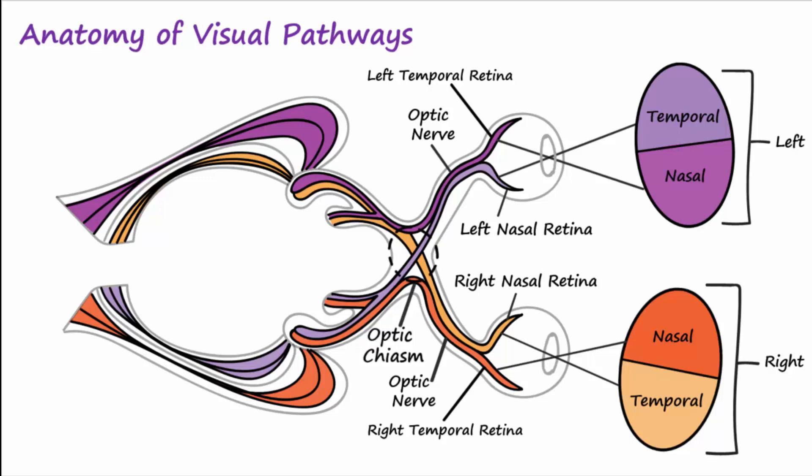After the optic chiasm, visual information travels via the optic tract all the way to the thalamus. Remember that all sensory information going to the brain, except for olfactory information, first goes to the thalamus before traveling to the cerebral cortex. The nuclei of the thalamus that receive visual information are known as the lateral geniculate nuclei, or LGN.